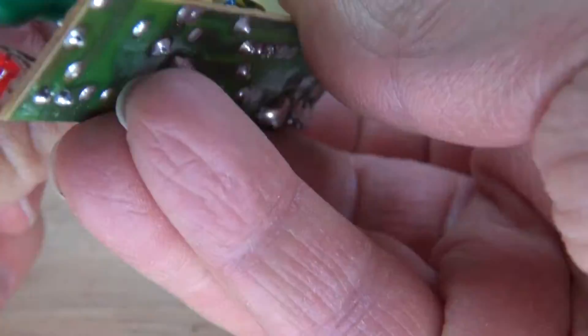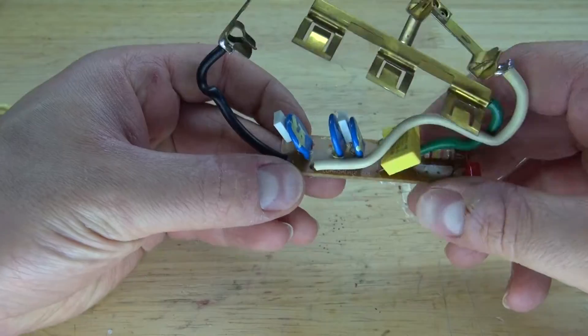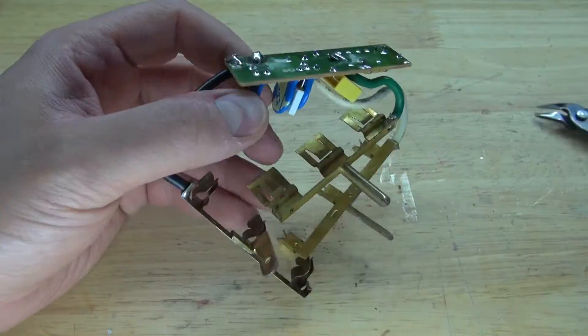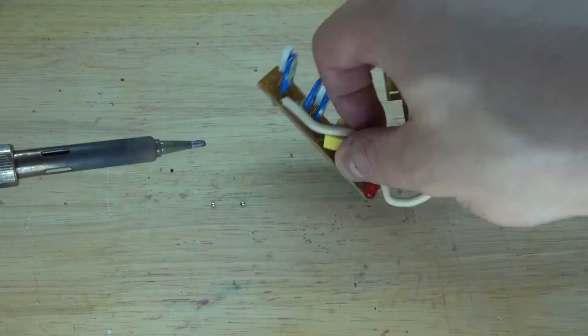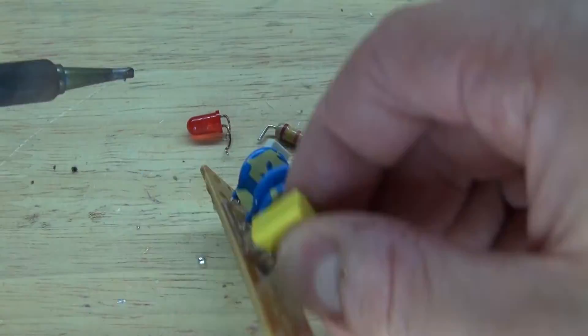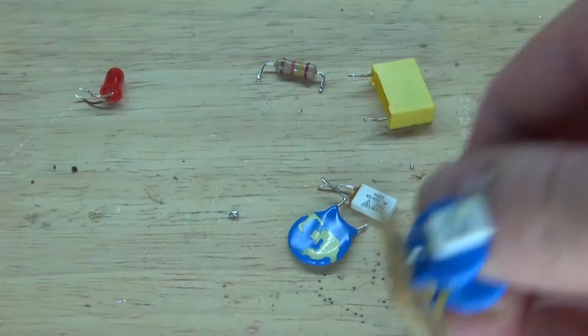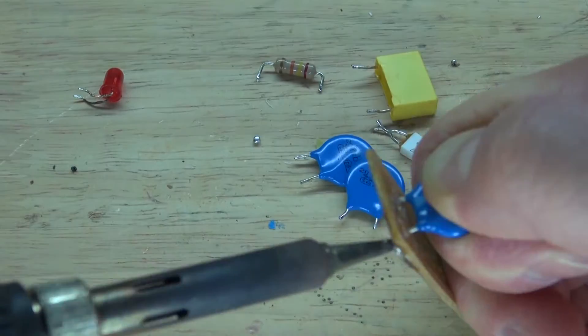Next, remove the tape that's wrapped around the capacitors. Next, simply desolder all of the components. And there, everything is now desoldered.